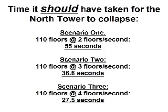As we have just seen, the North Tower collapsed in approximately 10 seconds, indicating that it went into complete freefall. Had it not gone into complete freefall, it would have taken longer to collapse. Let's look at three scenarios exploring how long it should have taken under a true structural failure. In Scenario 1, had 2 floors failed each second, the whole tower would have taken 55 seconds to collapse.